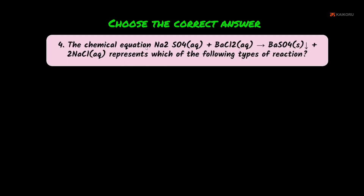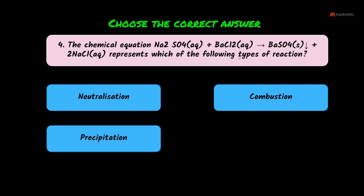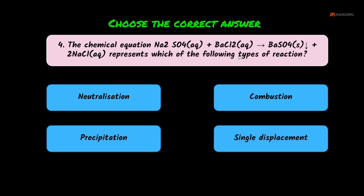Fourth question: the chemical equation Na₂SO₄ + BaCl₂ → BaSO₄ (precipitate) + 2NaCl represents which type of reaction? Options: neutralization, combustion, precipitation, single displacement. On the product side there is a down arrow (precipitate), so the answer is precipitation.